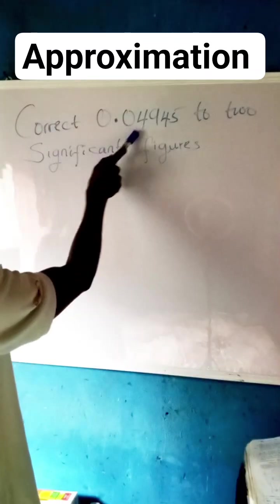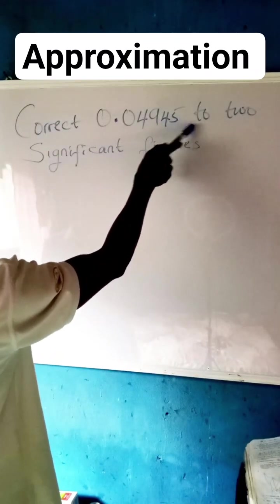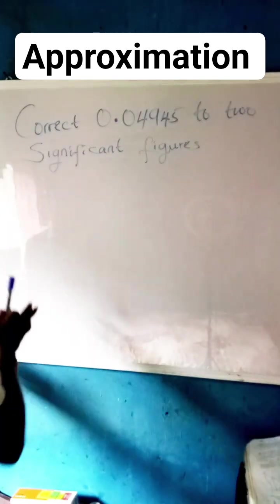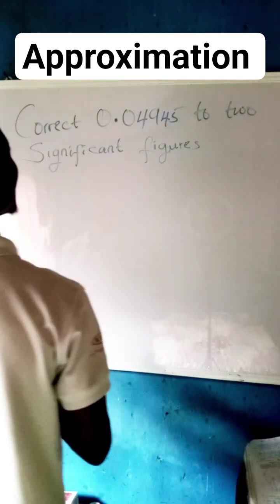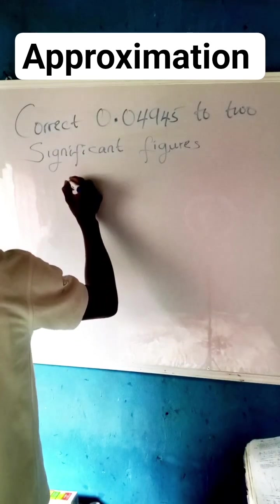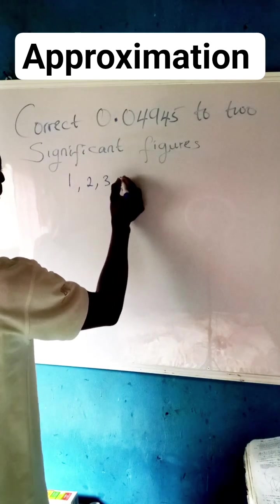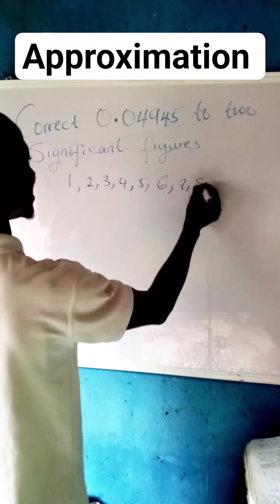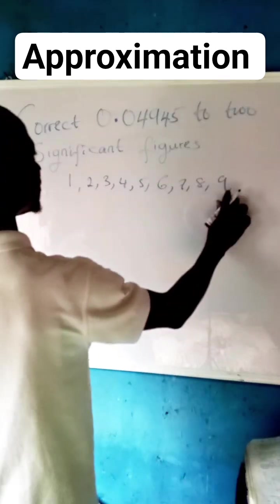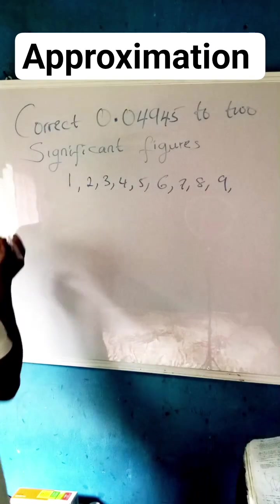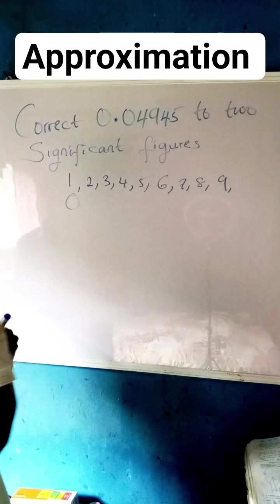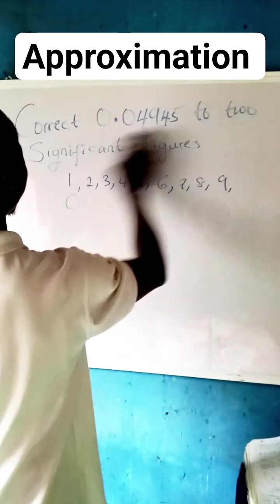Correct 0.04945 to two significant figures. Significant figures talk about numbers beginning from 1, 2, 3, 4, 5, 6, 7, 8, 9. They are called significant figures because they have value, but zero is not a significant figure. So when we say correct this number to two significant figures, it means we are starting our accounting from non-zero.